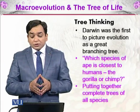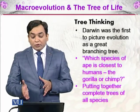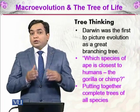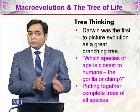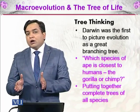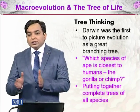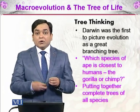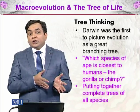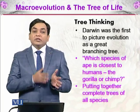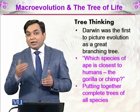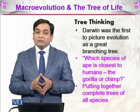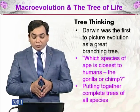Which species of ape is closest to humans — gorilla or chimpanzee? We can take some DNA from the gorilla, some DNA from the human, and some DNA from the chimp and see whose DNA is more conserved with humans. The one with less common DNA with humans will be less related, and the one with more common DNA will be more related.